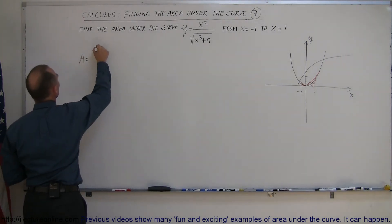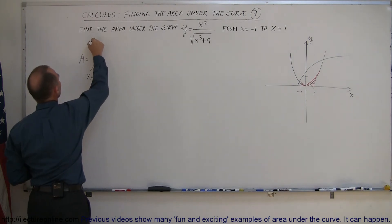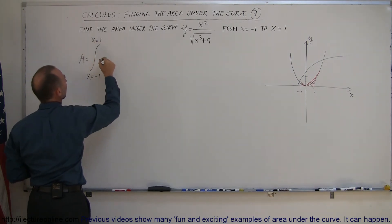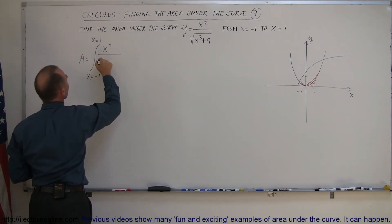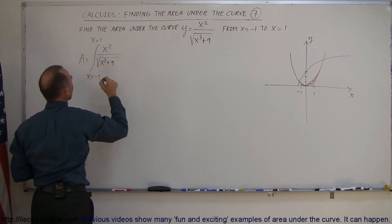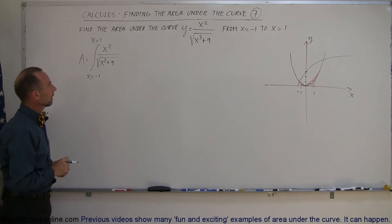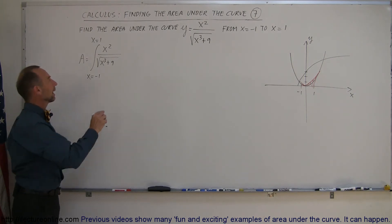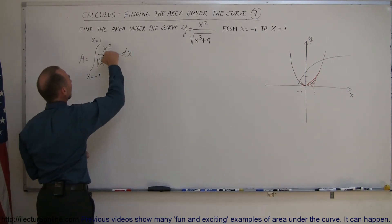Now I'm ready to set up the integral. The area equals the integral from x equals negative 1 to x equals positive 1 of x squared divided by the square root of x cubed plus 9, dx. Notice that x squared looks like the derivative of x cubed underneath the radical — that gives me an idea for substitution.